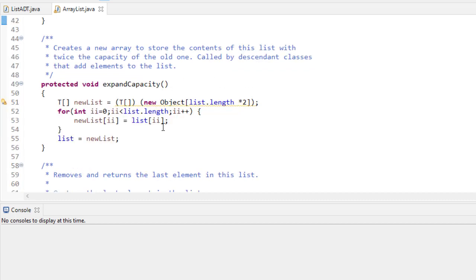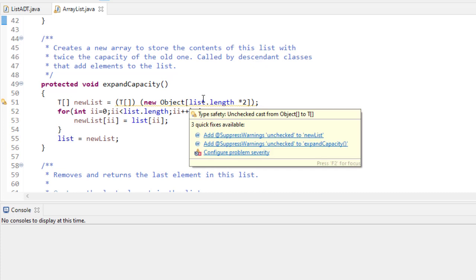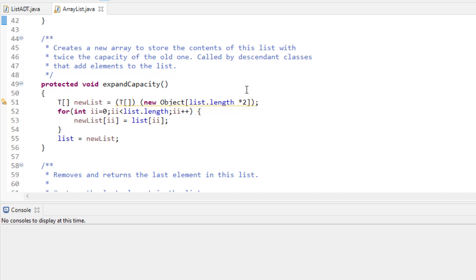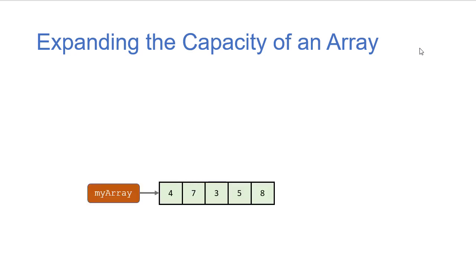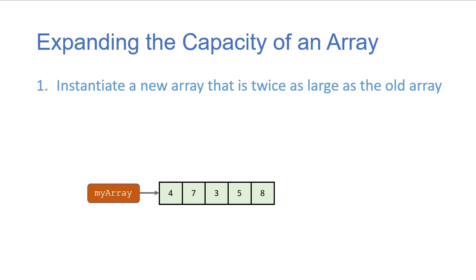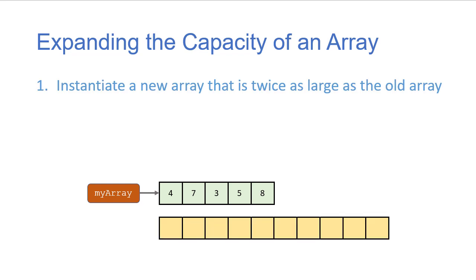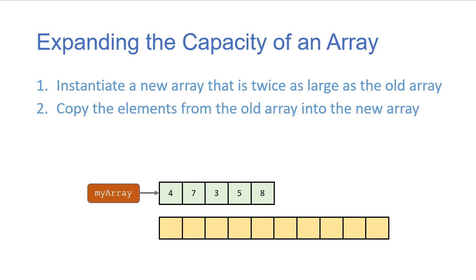One of the drawbacks of using an array is that it has a fixed size, so there will be times when we want to expand the capacity. If we have an array that's full — say, five elements — we need to create a new array with larger capacity. We instantiate a new array that's twice as large as our old array, then copy the elements from the old array into the new one.